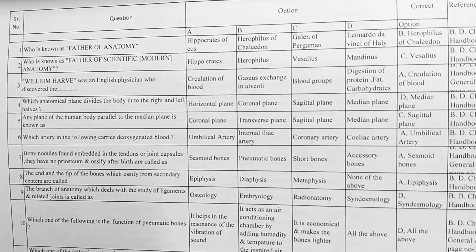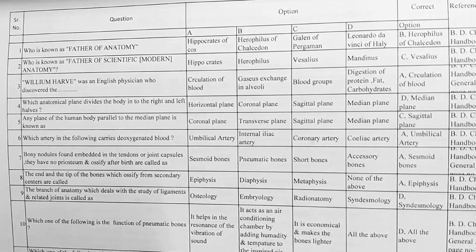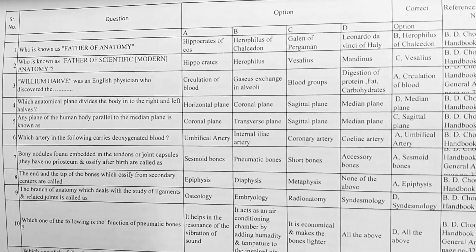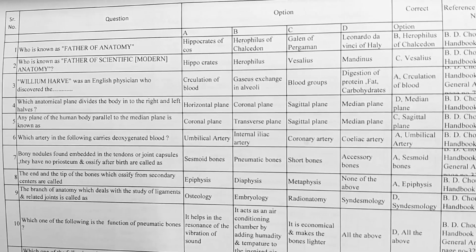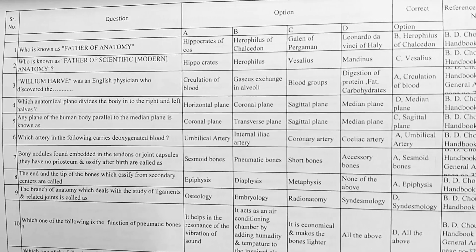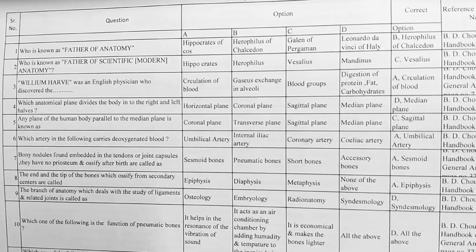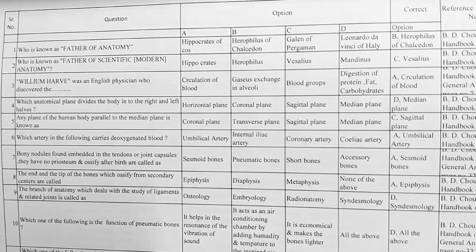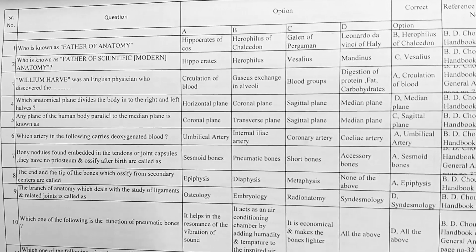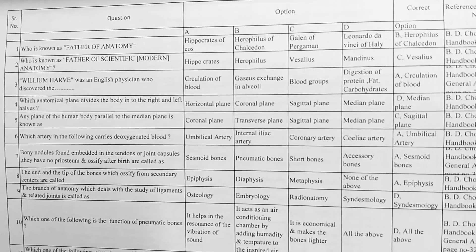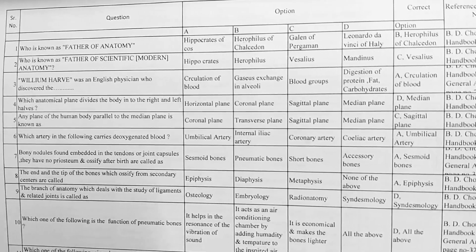Next, which anatomical plane divides the body into the right and left halves? Options: A. horizontal plane, B. coronal plane, C. sagittal plane, D. median plane. Correct option is D, median plane.